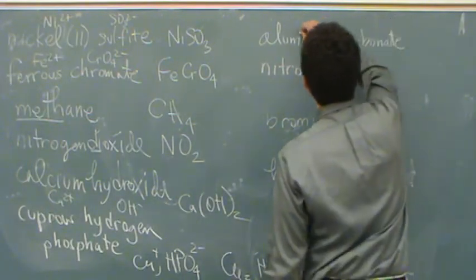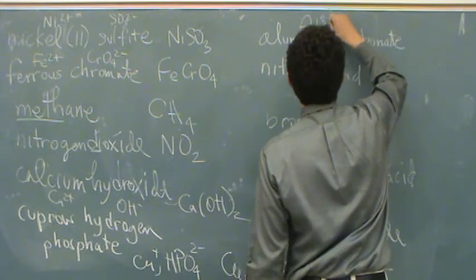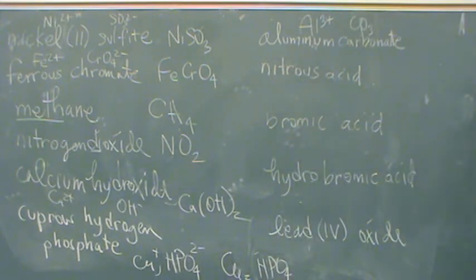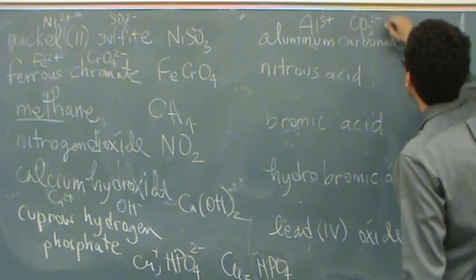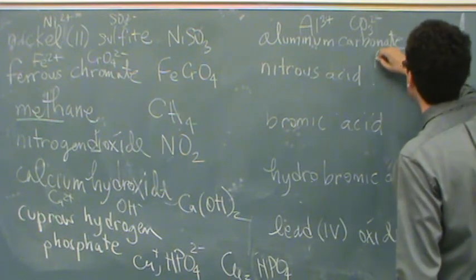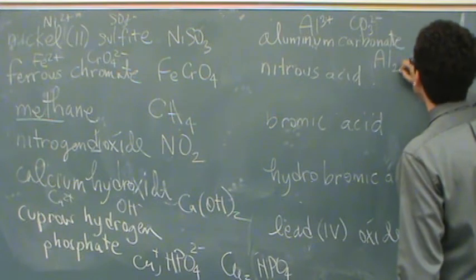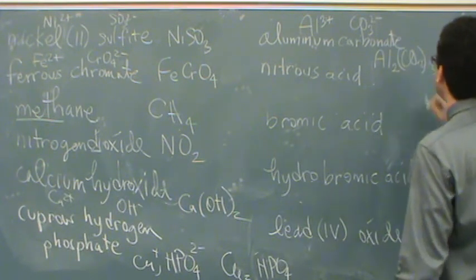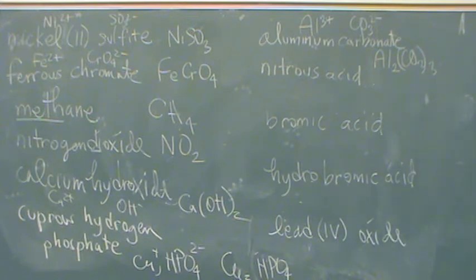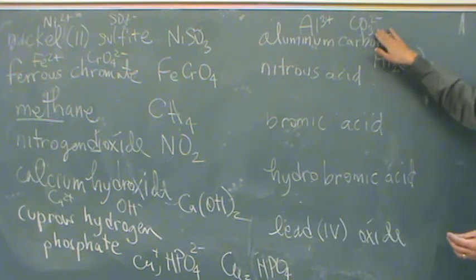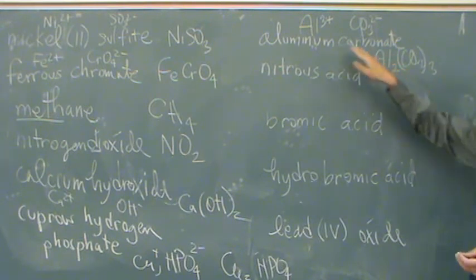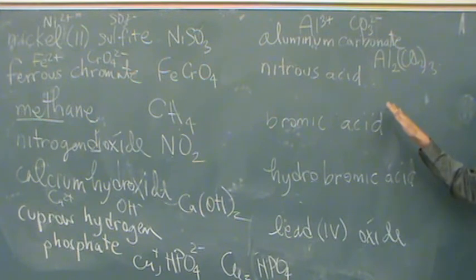Aluminum carbonate. Aluminum is Al 3+. Carbonate is CO3, what charge? 2-. So I don't quite have a lot of room here. Al2(CO3)3. Because I need to balance the 2-. So I need three carbonates at -6, and two aluminums at +6 to balance the charge.